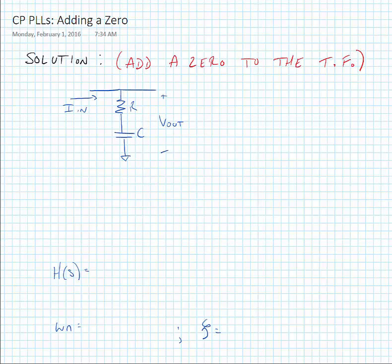In order to add a zero to this transfer function, we're just going to put a resistor in series with the capacitor. So, our new transfer function for this loop filter, we're just finding the impedance of the filter, essentially. F of S is equal to 1 plus S R C divided by S C. So, we have that zero in the numerator, and we have the integrator in the denominator.